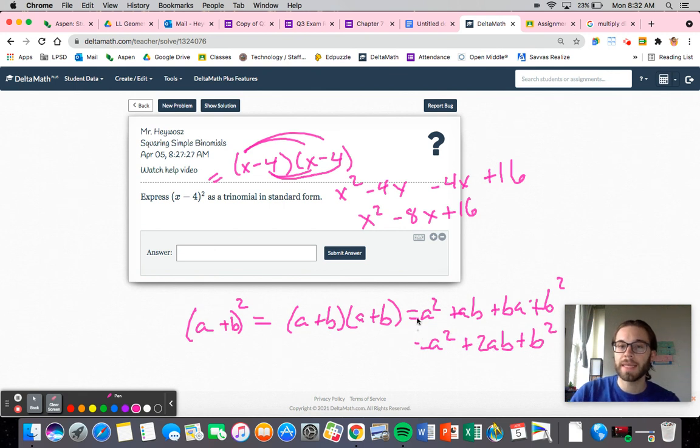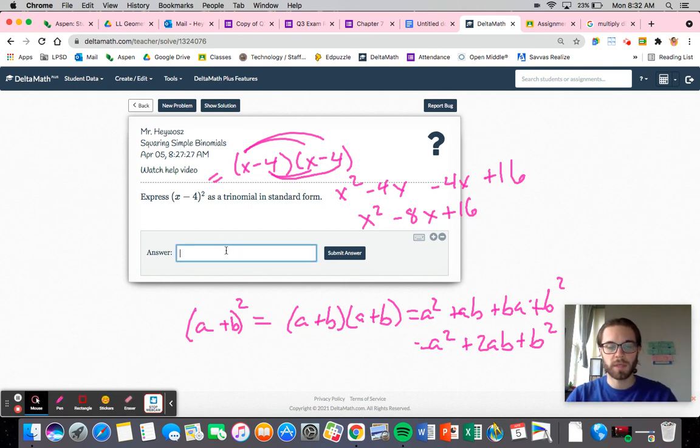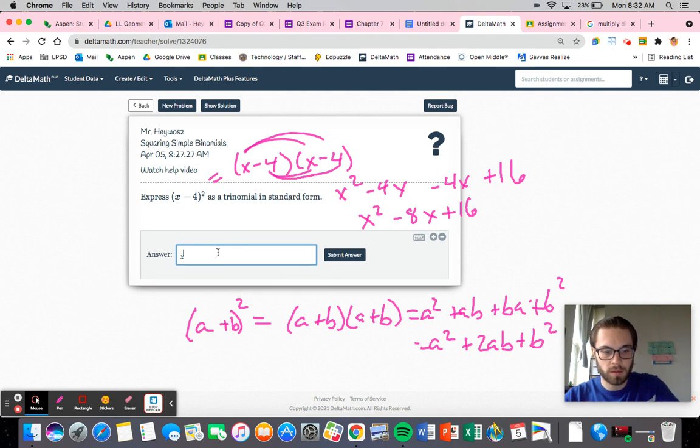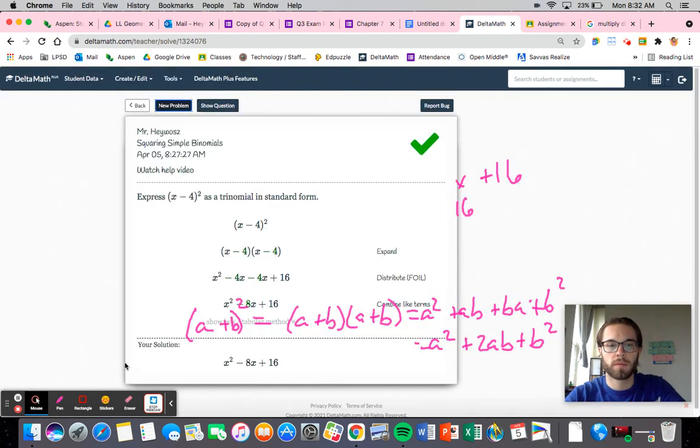So a plus b squared is exactly as you see up here. The first term squared, the middle term, you multiply them together and double it. Negative 4x times 2 is negative 8x. And then you square the last thing. That's all that it is. Let's put this in: x squared minus 8x plus 16. And there we go.